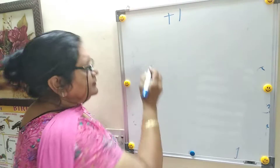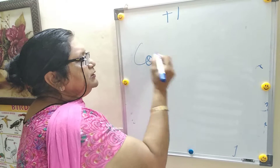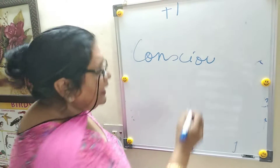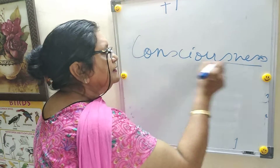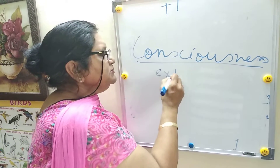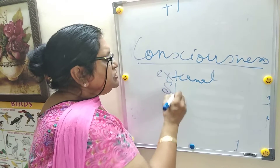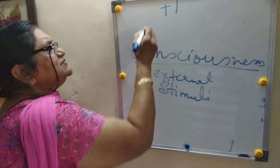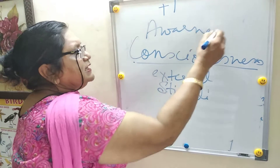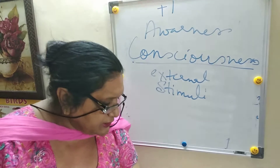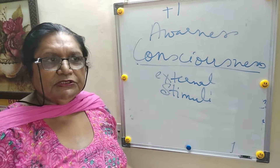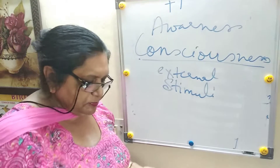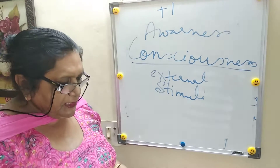The next property is called consciousness (C-O-N-S-C-I-U-S-N-E-S-S). This means response to external stimuli, also called awareness of the surroundings. This response may be physical, chemical, or biological. It is a very important property of living beings.